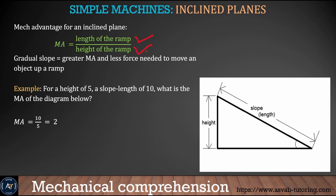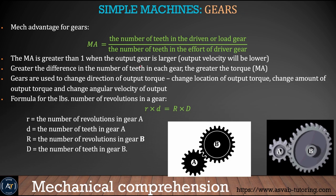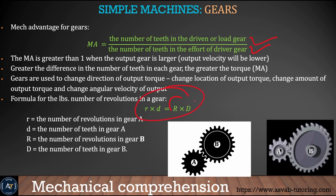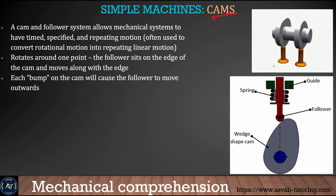Next we learn gears. The mechanical advantage of a gear is the number of teeth in the driven or load gear divided by the number of teeth in the driver gear. There is a relationship between the number of teeth and the number of rotations: R1 × D1 = R2 × D2. Use this equation to find the number of teeth and revolutions for bigger or smaller gear systems.